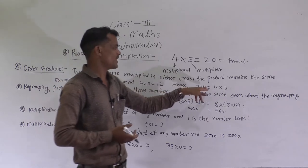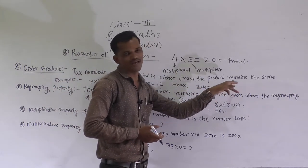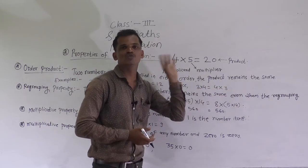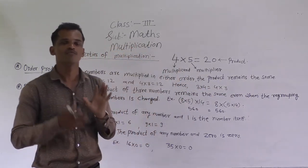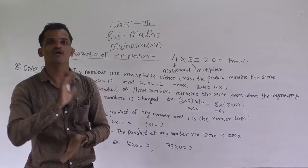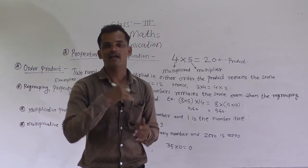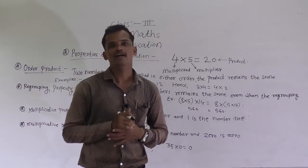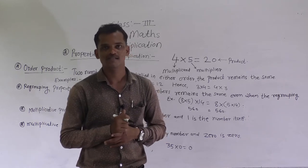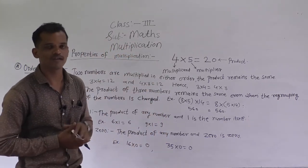3 multiplied by 4 is equal to 4 multiplied by 3. This property states that if we change the order of the multiplicand and multiplier, their product remains the same. This is the first property.